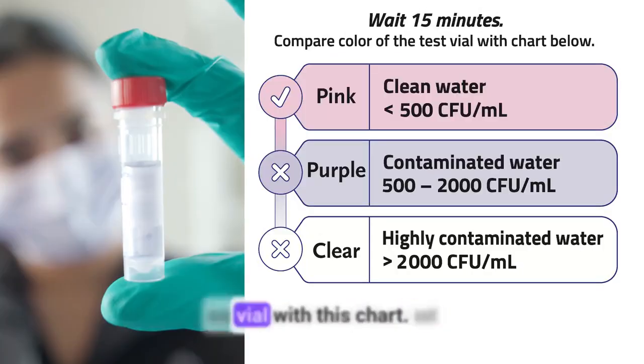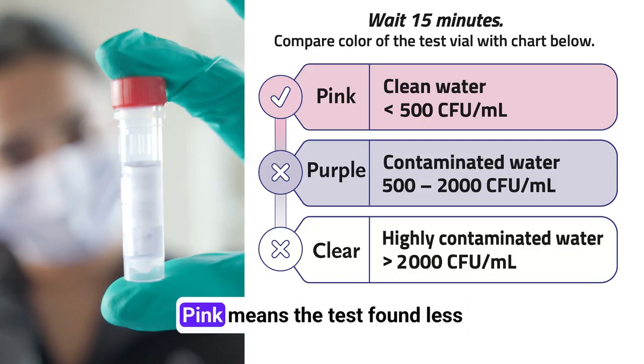Then, compare color of the test vial with this chart. Pink means the test found less than 500 CFU per milliliter and you have clean water.